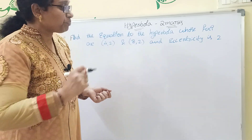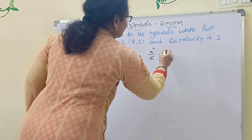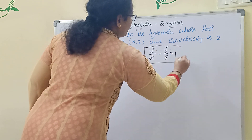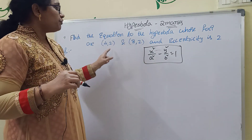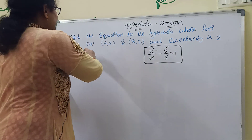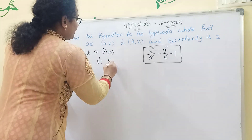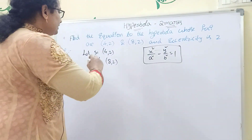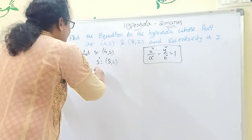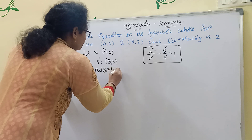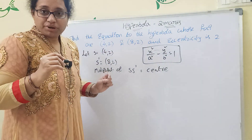The general equation of the hyperbola formula is x²/a² minus y²/b² equal to 1. We should convert into this equation by finding a, b, and the center. Since two foci are given — S and S' — we let S equal to (4, 2) and S' equal to (8, 2). The midpoint of S and S' gives us the center.